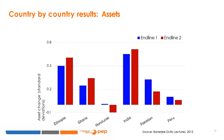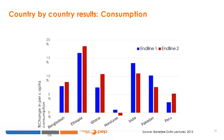The results are very interesting and clear. For most countries in the sample, households end up with more assets than the control group — with larger effects in Ethiopia and India, medium effects in Ghana and Pakistan, small positive effects in Peru, and negative effects in Honduras where there was a problem with program implementation. The households also have higher consumption levels in all countries except Honduras.